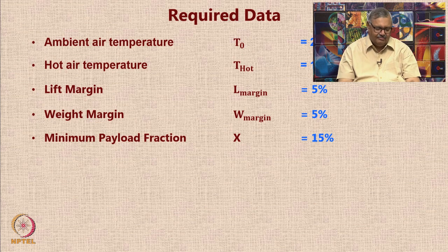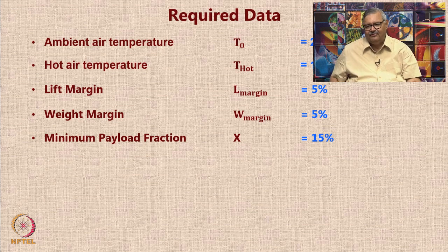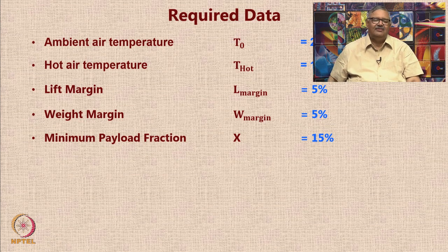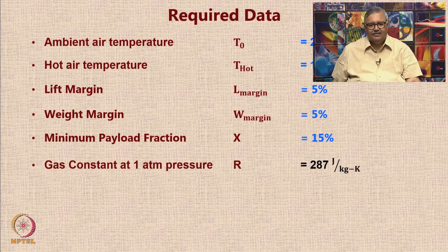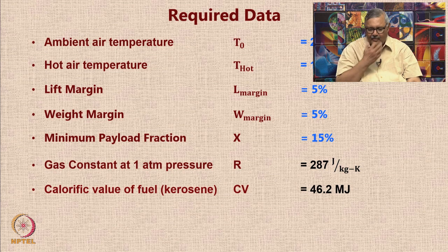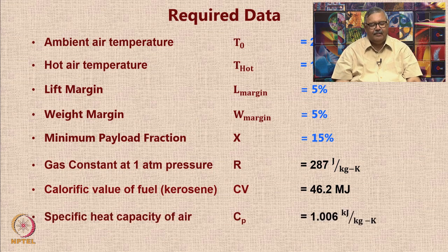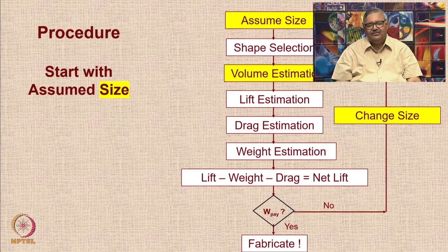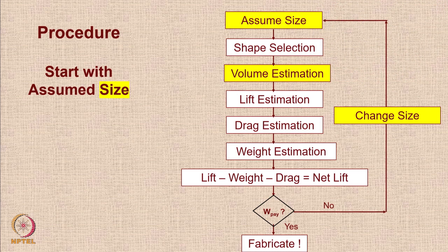For a balloon with a total self weight of 100 grams, you should be able to lift at least a payload of 15 grams. There are also given numerical values: the gas constant, calorific value of fuel or kerosene (supplied by the fuel provider), and specific heat capacity of air under normal conditions which is around 1 kilojoule per kg per degree Kelvin. We select the second method — fixing the shape first and then starting with sizing.